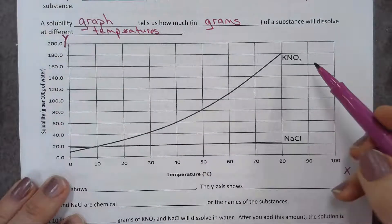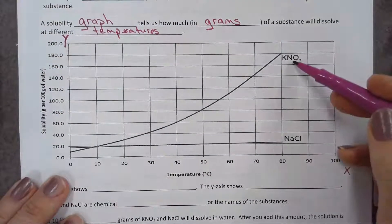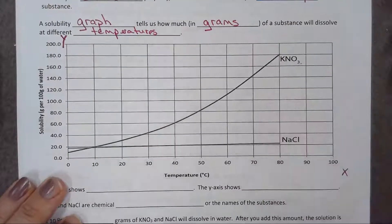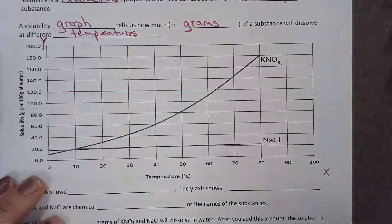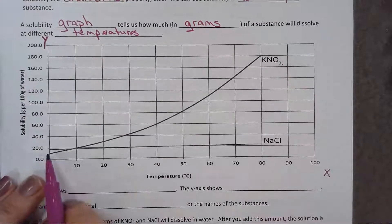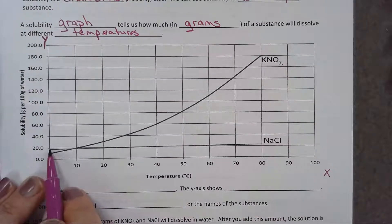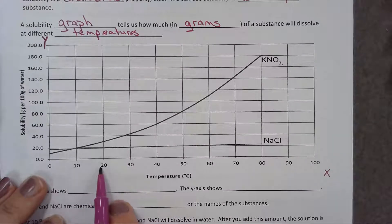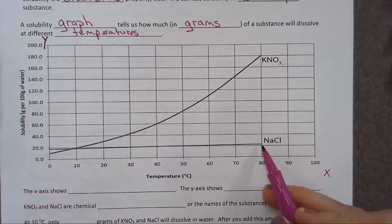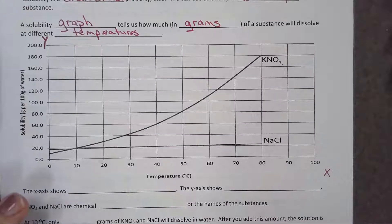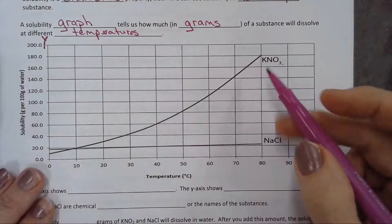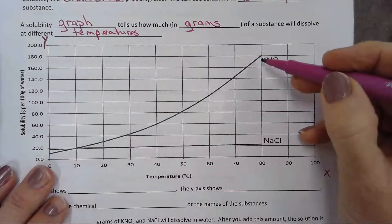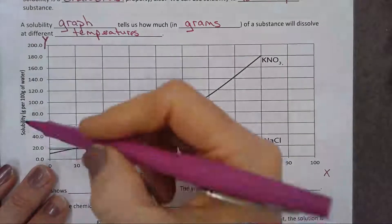Here I've got two substances: KNO3 and NaCl. I don't know what KNO3 is, but NaCl is salt. Salt starts at 20, and even as I increase the temperature from 10 to 20 to 30, NaCl seems flat. But KNO3 — as the temperature goes up, how much dissolves also goes up.